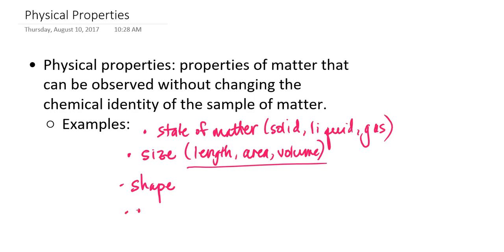This also applies to the color — or a lack of color — of a substance. For example, ice cubes tend to be colorless. If they're made out of water and there's no food coloring in the water, then ice cubes are essentially transparent. But again, my being able to observe that does not change the identity of that sample of matter.